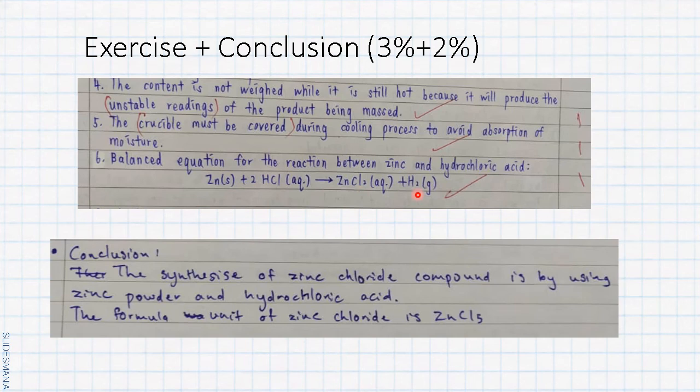The last exercise: write down the reaction between zinc and hydrochloric acid. It will produce zinc chloride and hydrogen gas. Make sure that you balance the equation. The last part is conclusion. Conclusion is according to your objective. The synthesis of zinc chloride compound is by using zinc powder and hydrochloric acid. The formula of zinc chloride depends on your result. If you get ZnCl5, you just state ZnCl5, because during discussion you already explained why you got the wrong formula.